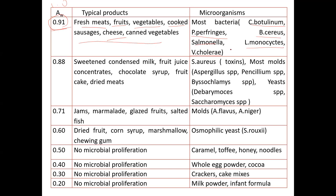When water activity is slightly decreased to about 0.88, products like sweetened condensed milk, fruit juice concentrate, chocolate syrup, fruitcake, and dried meats can still support growth of Staphylococcus aureus, Aspergillus species, Penicillium species, and Saccharomyces species — causing food spoilage. At a water activity of 0.71, typical products are jam, marmalade, glazed fruit, and salted fish, and molds like Aspergillus flavus and Aspergillus niger can grow.